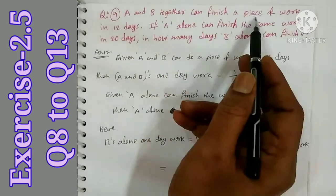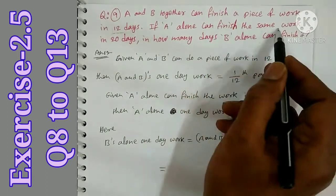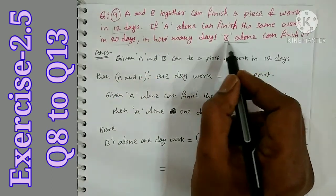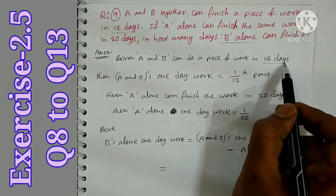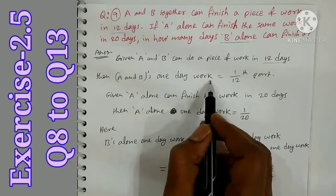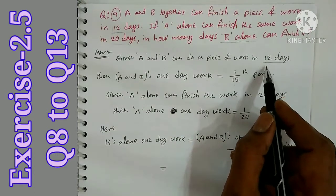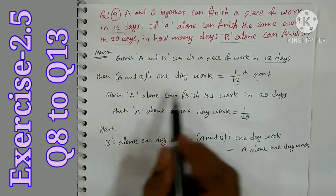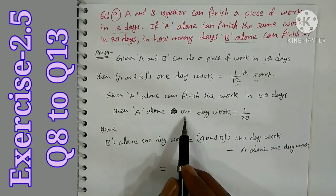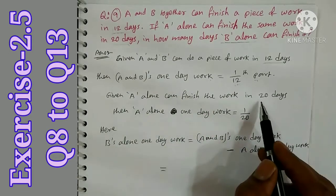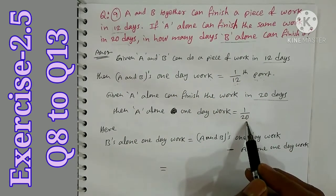A and B together do 1 by 12th part of the work in 1 day. Given A alone can finish the work in 20 days, A's 1 day work is 1 by 20. B's 1 day work equals A and B's 1 day work minus A's alone 1 day work.